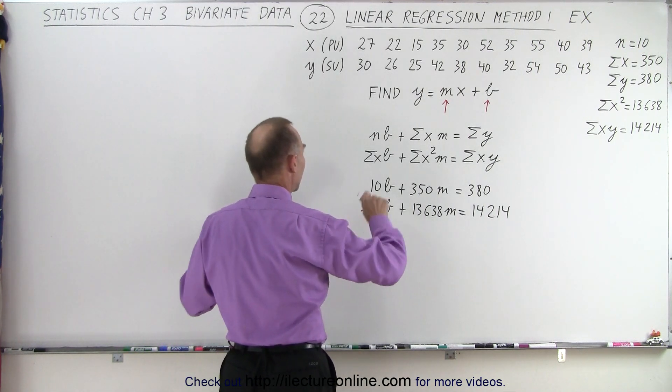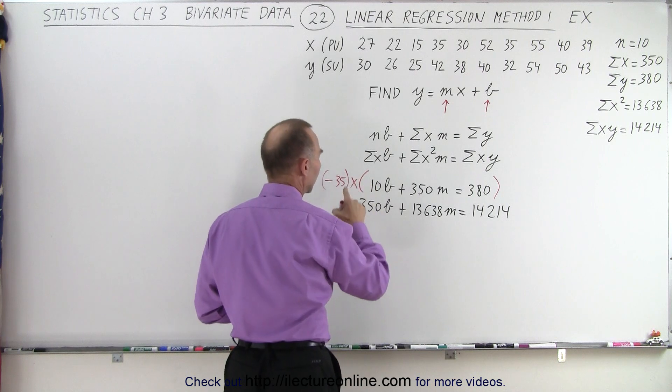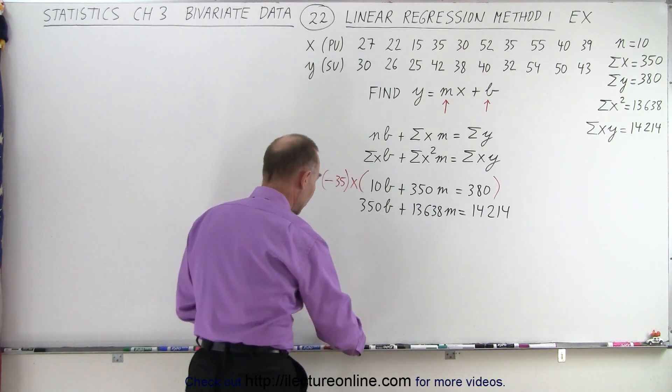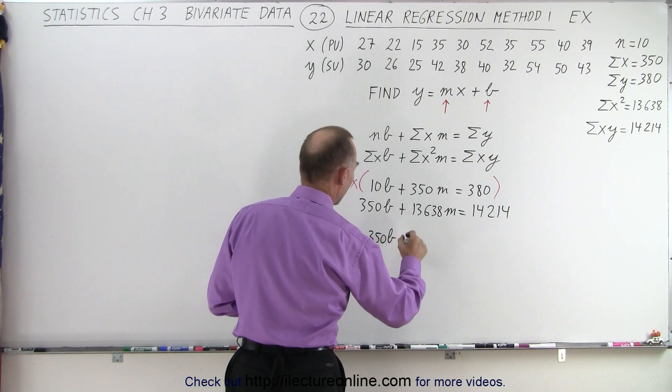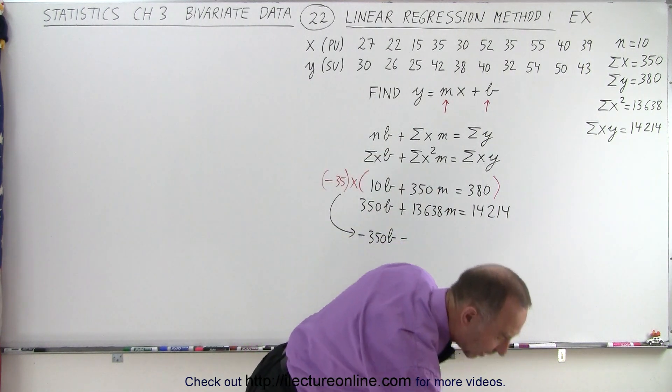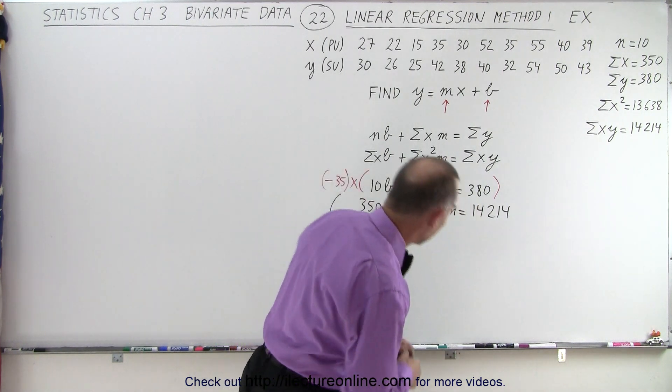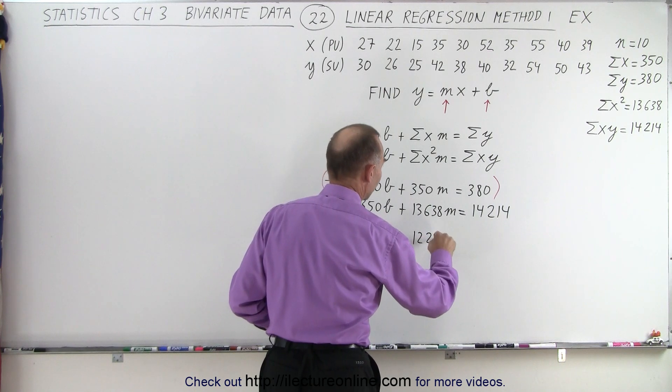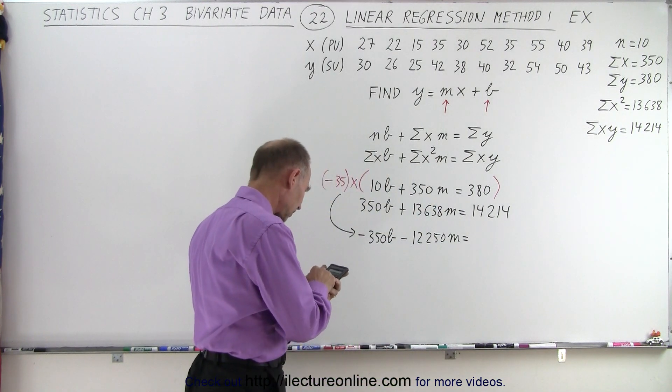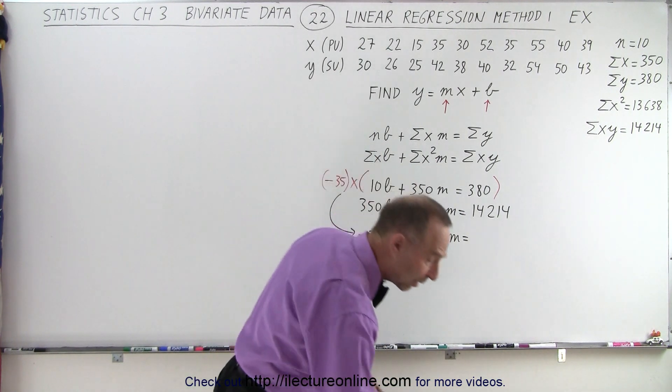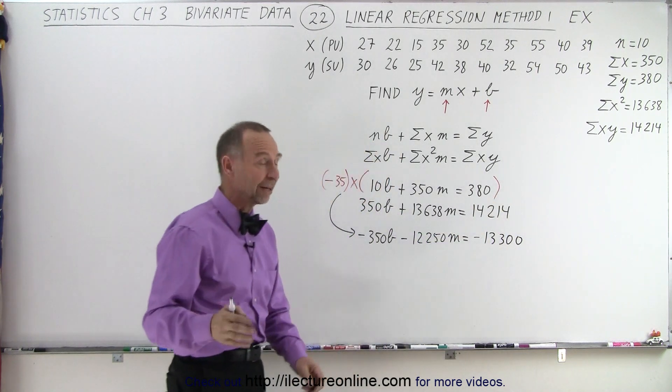I'm going to multiply the top equation by a negative 35. And of course I have to multiply both the left and the right side by that. When I do that, I get the following. Let's write it down here, so we get a minus 350b minus 350 times 35, which is a minus 12,250. Minus 12,250m is equal to, and then again, negative 35 times 380, I get 13,300. Negative, of course, 13,300.